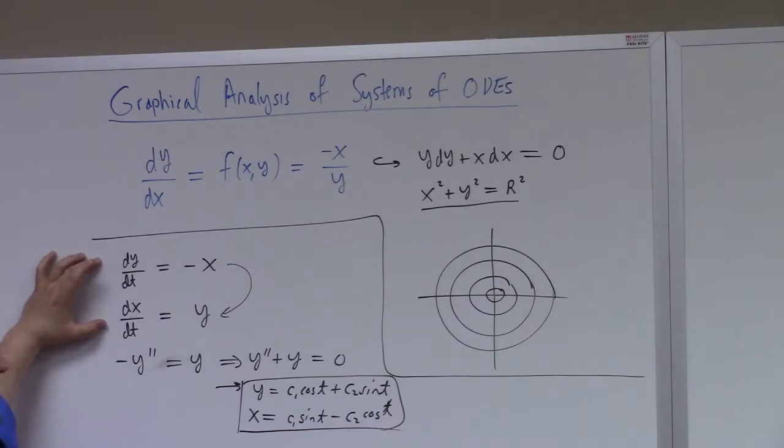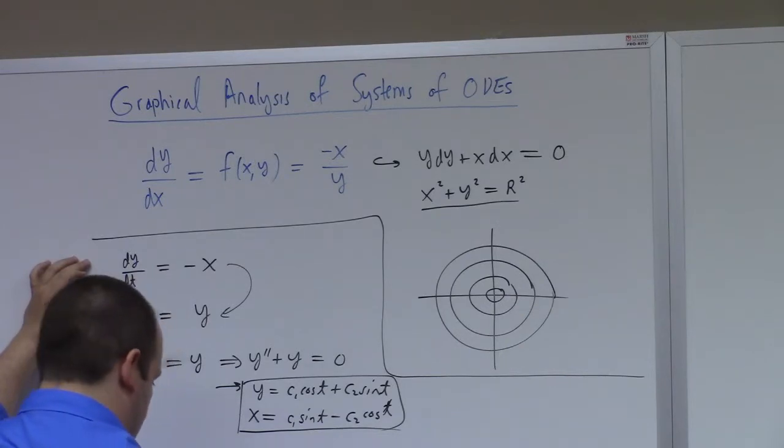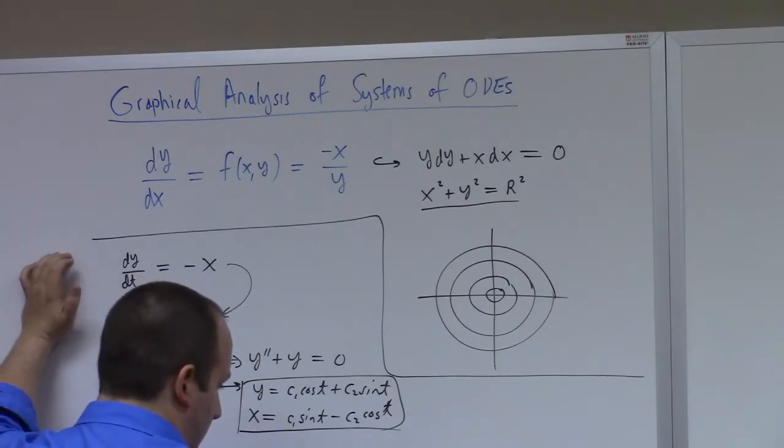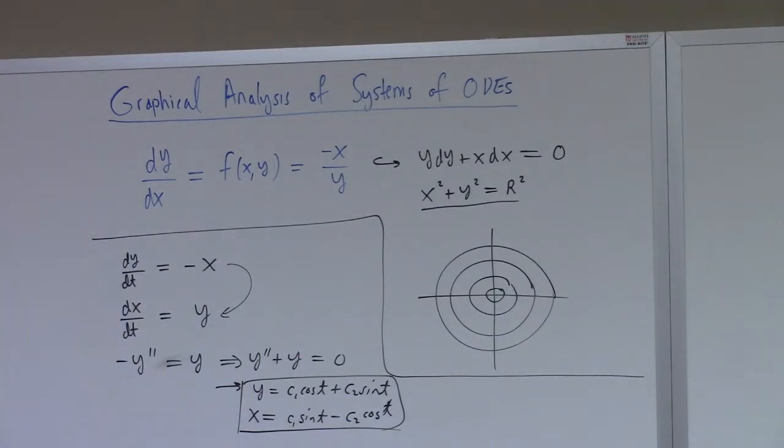The point is, you could trade this first order differential equation for a system of two first order differential equations with respect to time. A system like this, if we have dx/dt equal to f1 of x,y and dy/dt equal to f2 of x,y, is said to be an autonomous system of ODEs.